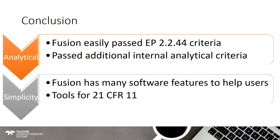In conclusion, the Fusion easily passes EP 2.244 criteria, as shown by all the analytical results. It even passed additional internal analytical criteria similar to what most pharmaceutical labs use. To make things simple, the Fusion has many software features including the pre-calculated system suitability standard set with automatic response efficiency, plus many tools for 21 CFR Part 11 compliance: electronic signatures, auto archiving, user permissions, and more.